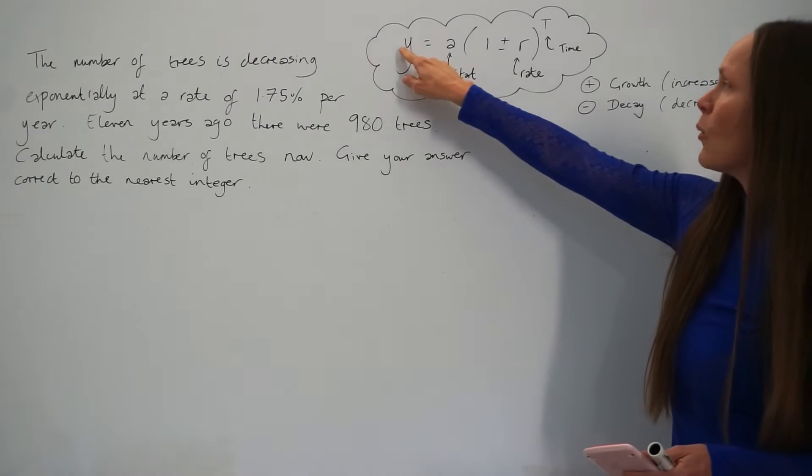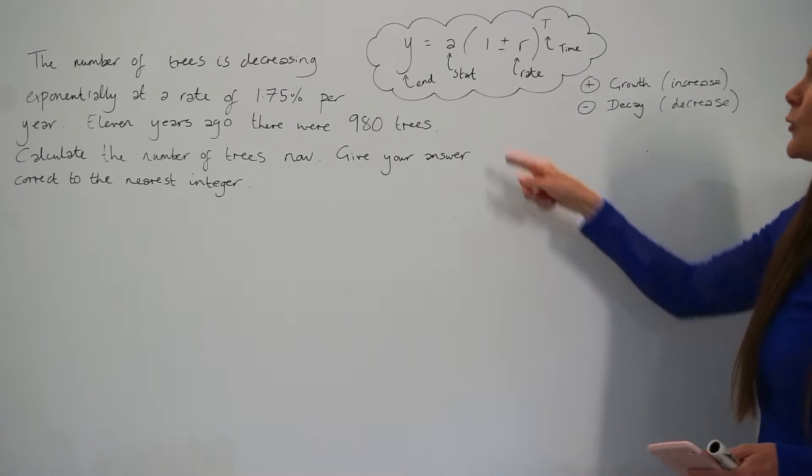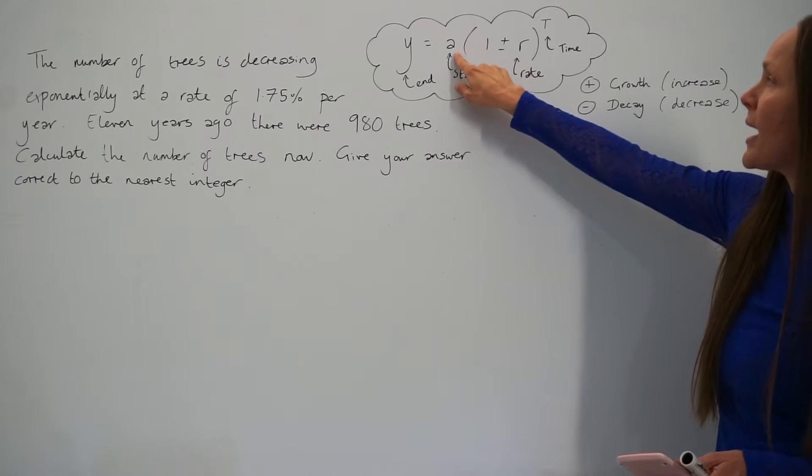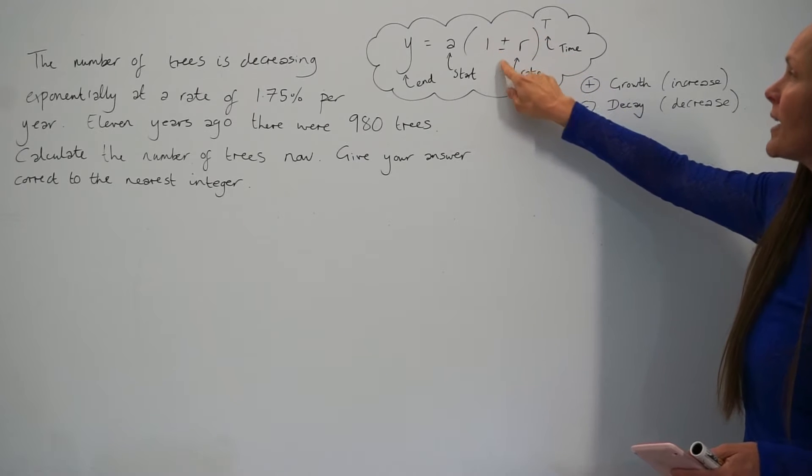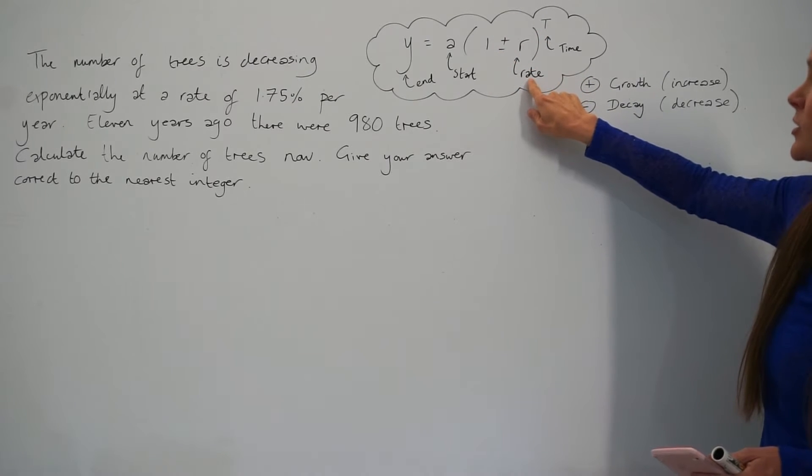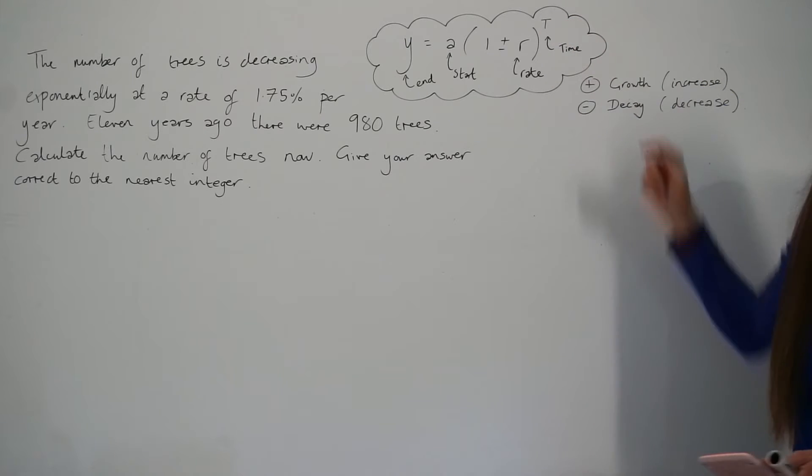All it means here is y is the end value, and to work out the end value you have to take the start value a, multiply this by 1 plus or minus r, which is the rate, percentage rate, and then you raise this to the power of t, which is time.